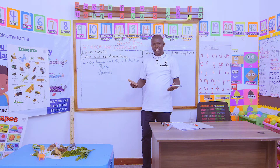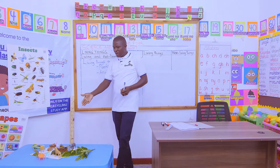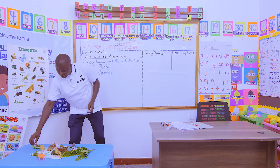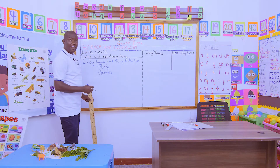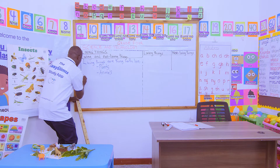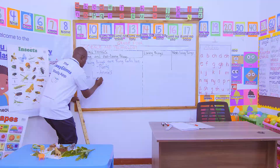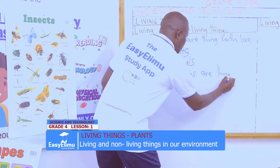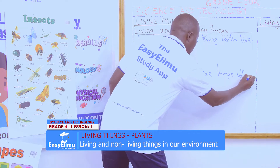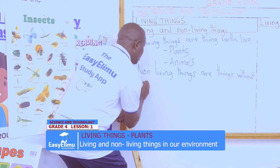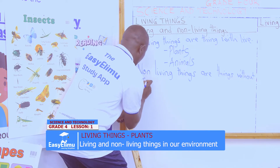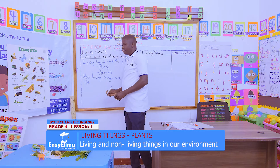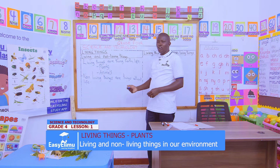What about when we say non-living things — what do we mean? For example, on our nature corner we have a stone, soil, even a dead plant or piece of plant. These are non-living things. Non-living things are things without life.